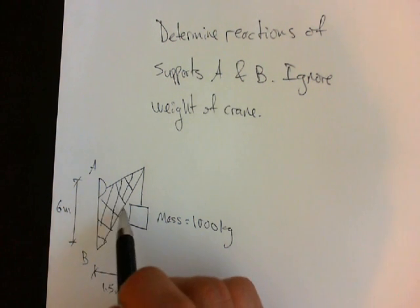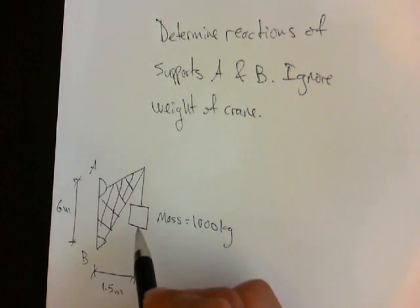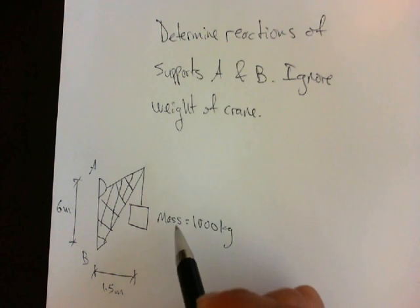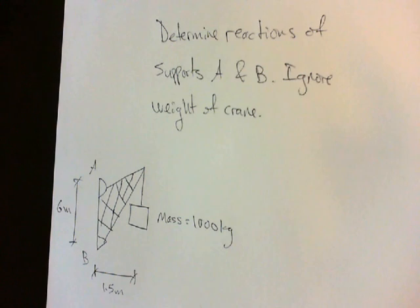In this example, we're given a crane with a pin support at A and a rocker support at B, and over here it's supporting a box with a mass of 1,000 kilograms. We're asked to determine the reactions at supports A and B, and in this case, we can ignore the weight of the crane.